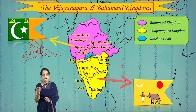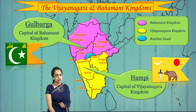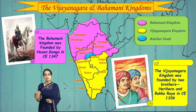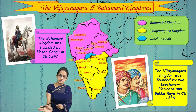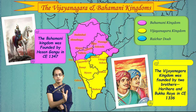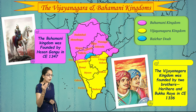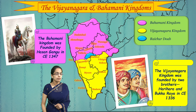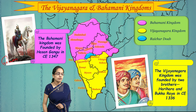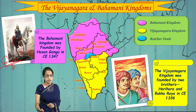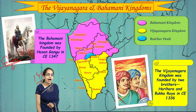The Vijayanagar empire had numerous kings and was initially founded by two brothers, Harihar and Bukka Rai. The Bahamani kingdom was founded by Hasan Gangu, who later named himself Alauddin Hasan Shah Bahamani. One of the most important figures in Bahamani history is Mahmud Gavan, who served as wazir under Muhammad Shah III. During his tenure, the Bahamani kingdom was at the peak of its power, but after his death in 1481, the kingdom began to decline.